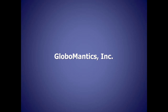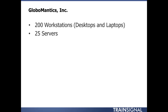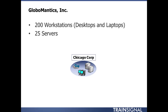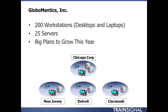First, meet our corporation. We are GlobalMantics, Inc. Currently, we have 200 workstations — a mix between desktops and laptops — and 25 servers. We have a Chicago corporate office, but we have big plans to grow this year. We are going to be adding sites: a Cincinnati site, a Detroit site, and New Jersey.